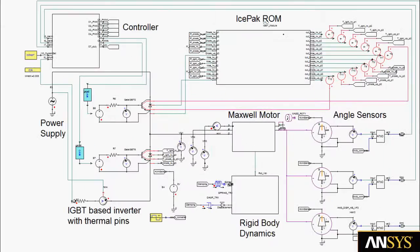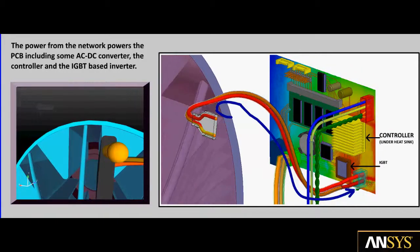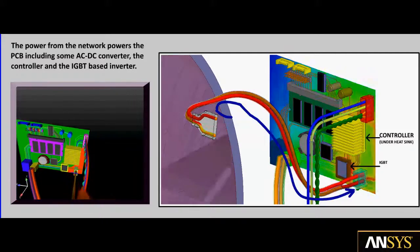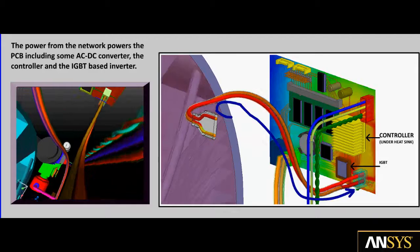We first consider the power supply in the ANSYS Simplora system simulation. The power is supplied to the IGBT inverter modules and the controller. The power from the network powers the printed circuit board including an AC to DC converter, the controller, and an IGBT-based inverter.